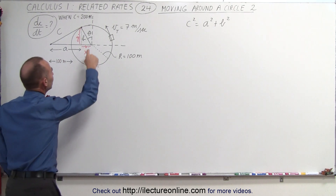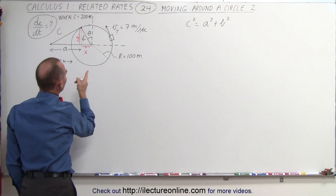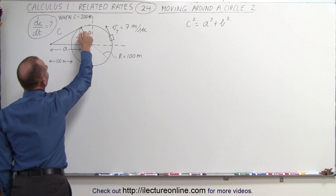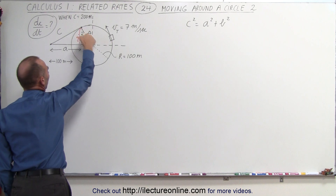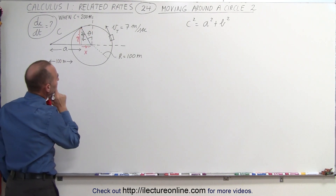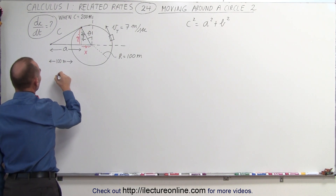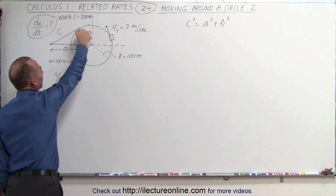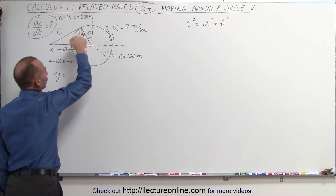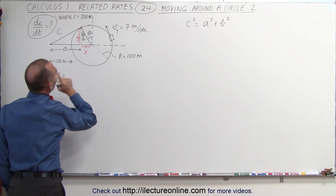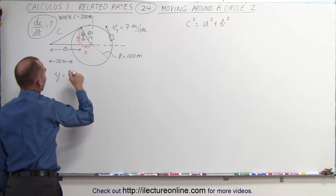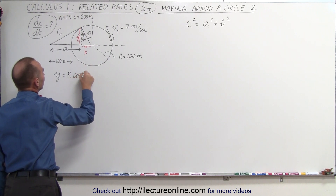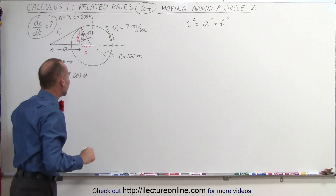We have to somehow relate that to the angle here. If this angle is theta, then this angle must also be theta — those are alternate interior angles. We can then say that y equals the hypotenuse of the small triangle, which is the radius of the circle, times the cosine of theta, because y is the adjacent side to the angle.